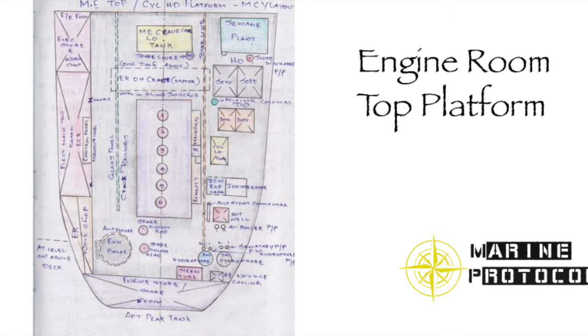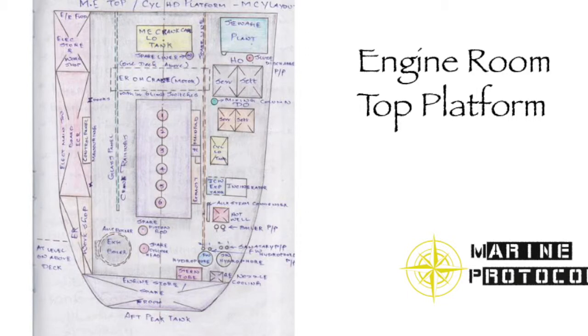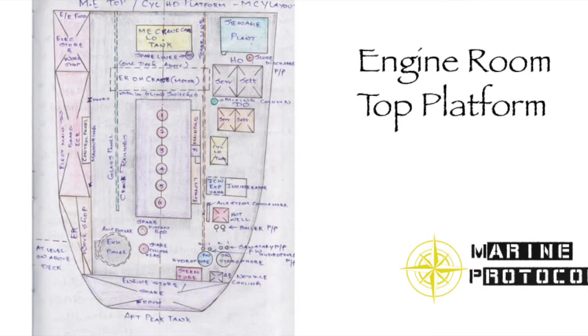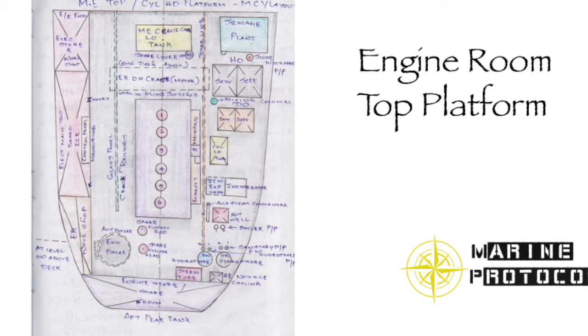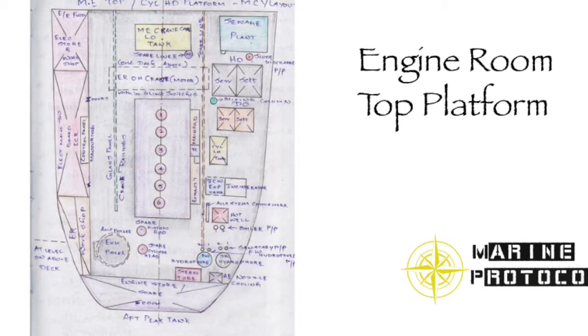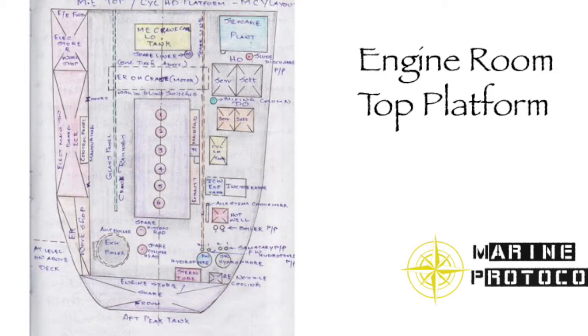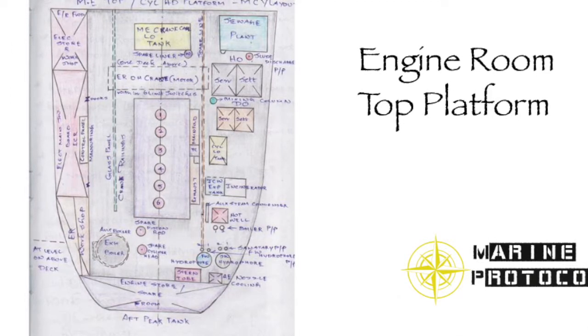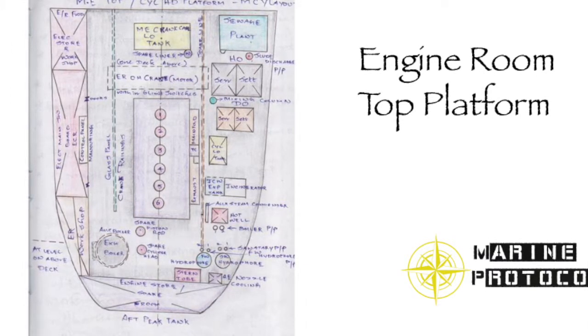Spare Parts: The top platform contains the spare parts of main engine and spares for the operation of the ship including the following: 1. spare piston rod, 2. spare cylinder head, 3. spare cylinder liner, 4. spare propeller, 5. spare tail shaft.